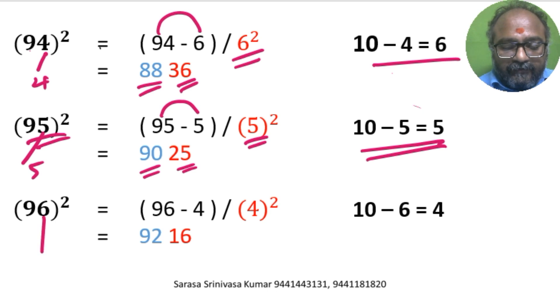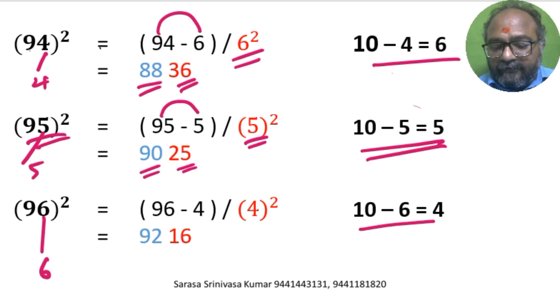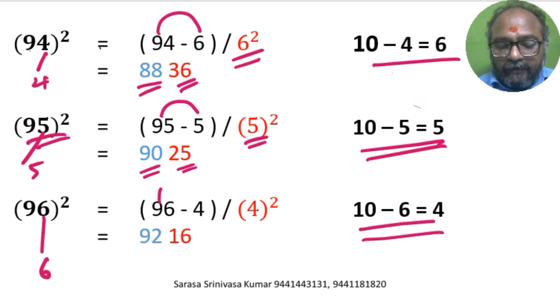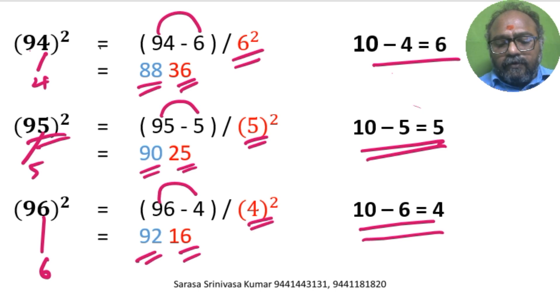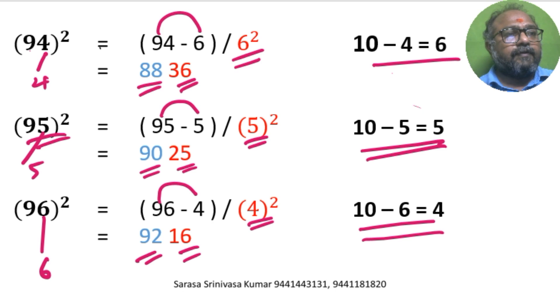96 square. Units digit is 6. 10 minus 6 is 4. 96 minus 4 is 92. 4 square is 16. So 92, 16 is the answer.